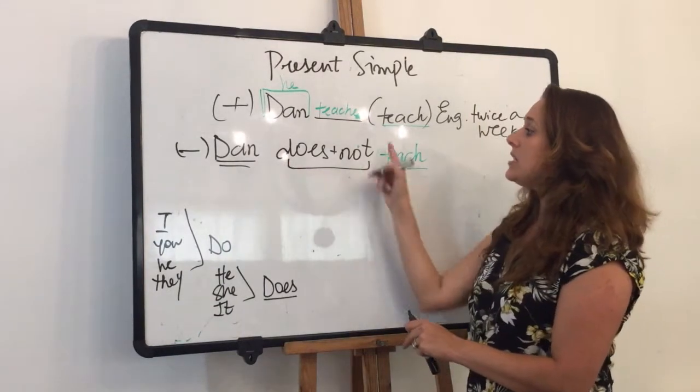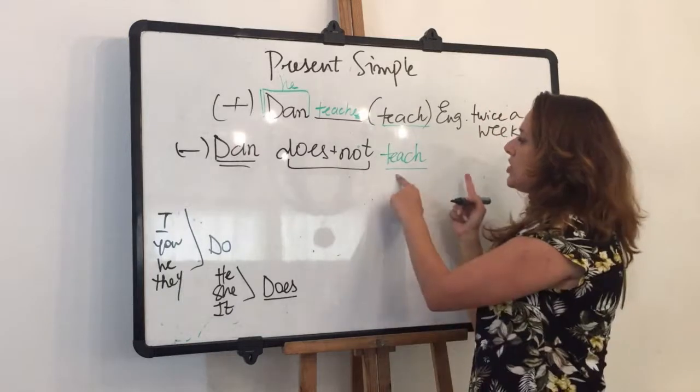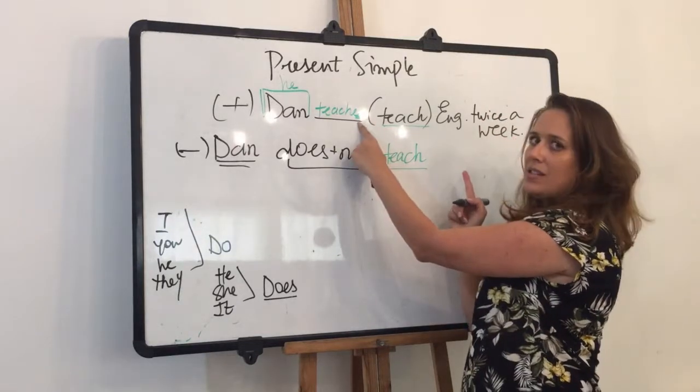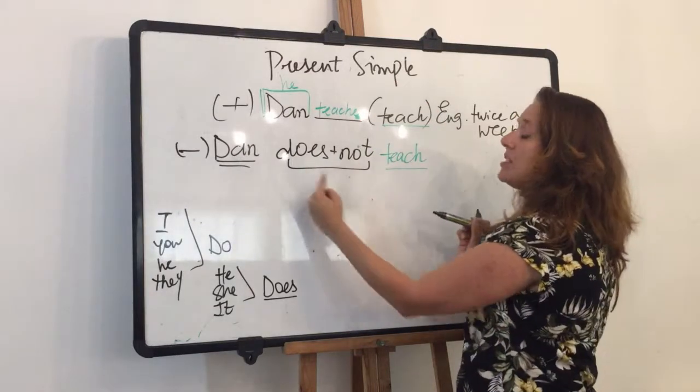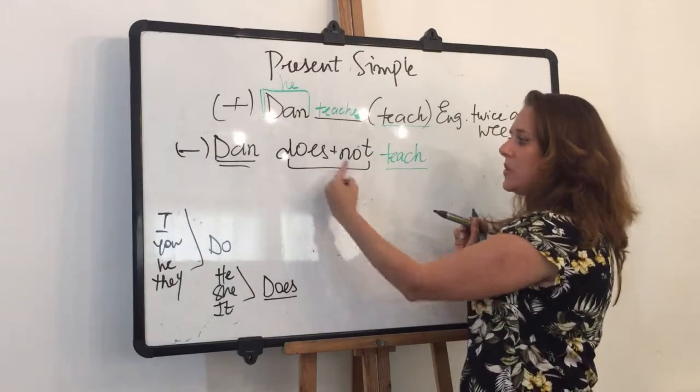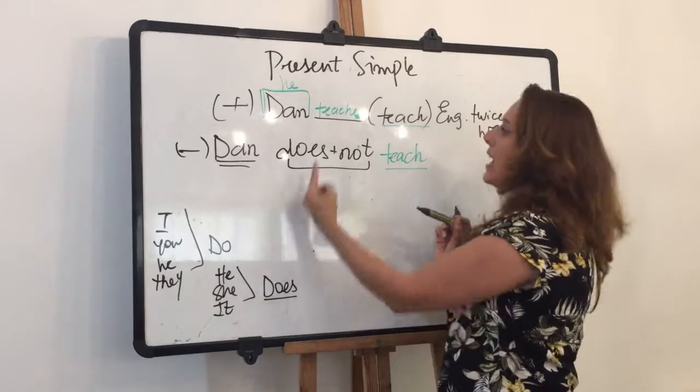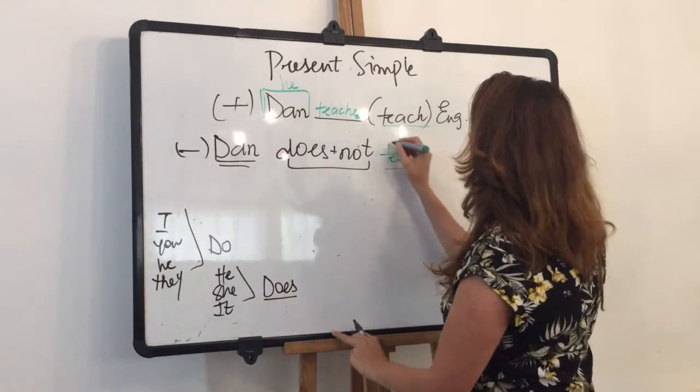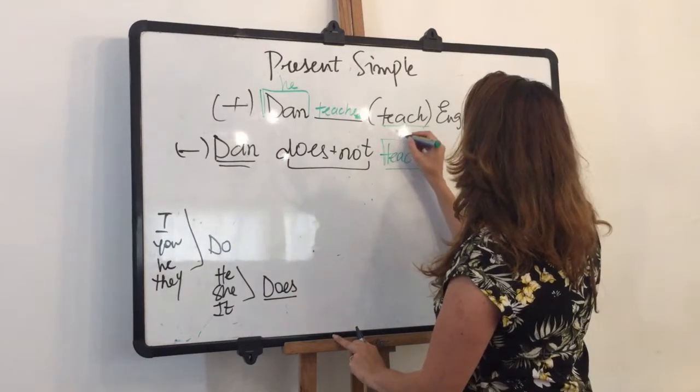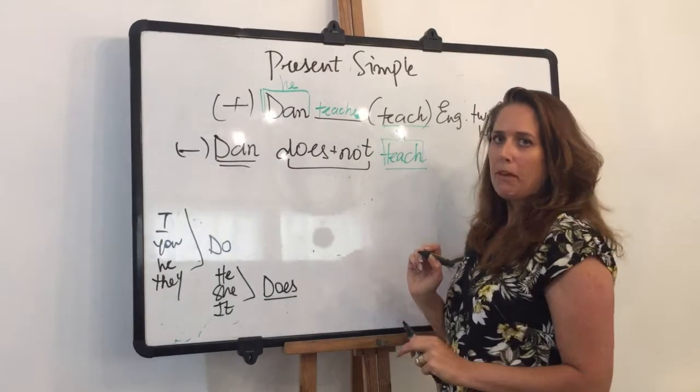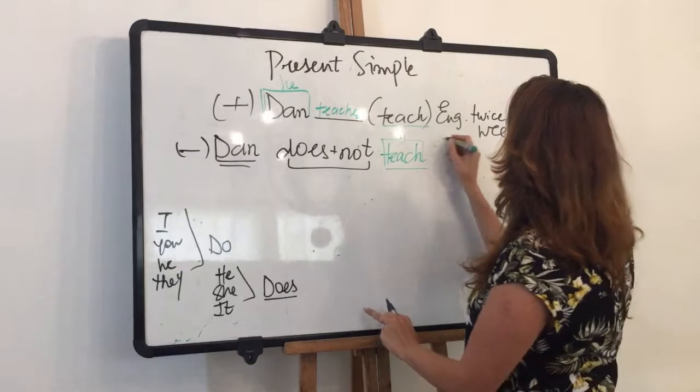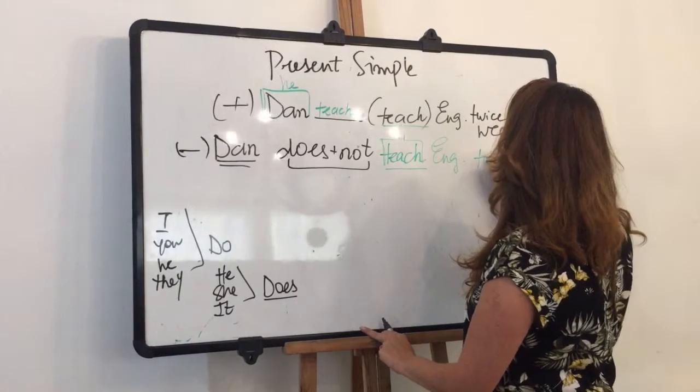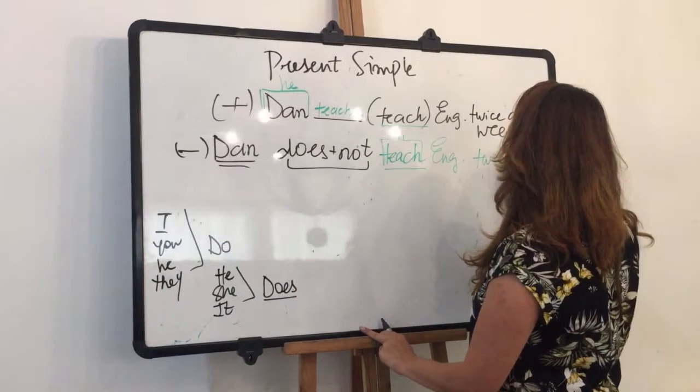And then something happens to my verb. Dan does not teach. What happens to my ES? It disappears. Why? Because I have does. So every time I use the auxiliary verb do or does, my verb goes back to its base form. V1. So it looks like Dan does not teach English twice a week.